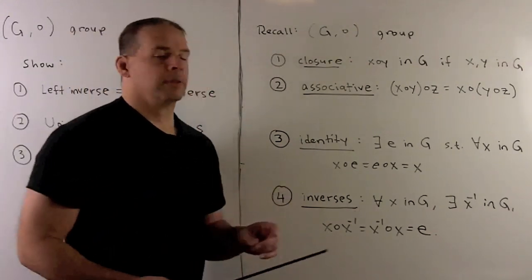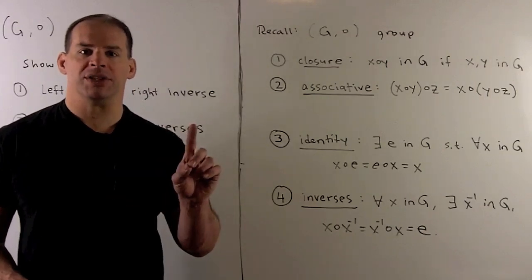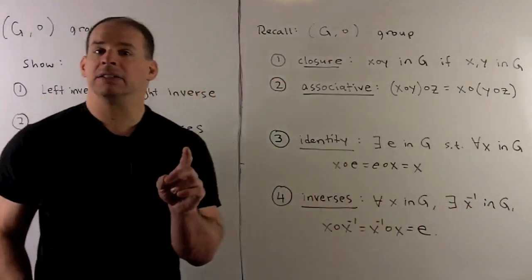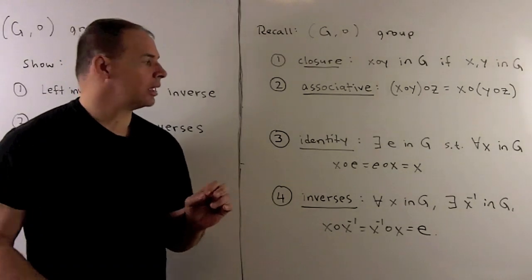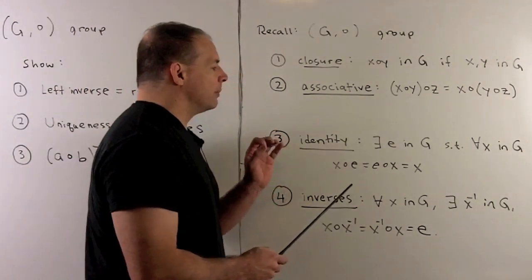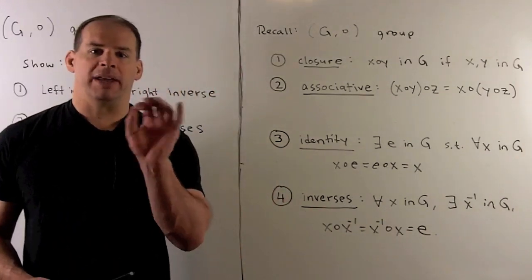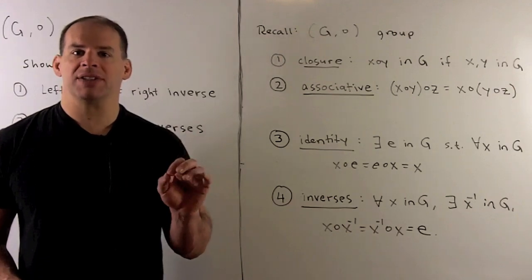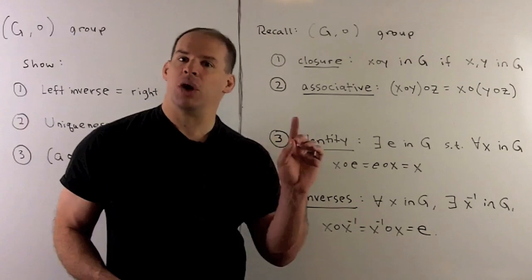Then we have associative. This just says when we multiply three elements, we can move the parentheses around as long as we stay in order. Remember, the net effect, in practice, we can ignore parentheses. Then we have the identity element. So there's going to be an element E in the group, such that if we pick any element of the group, say X, X times E equals E times X is equal to X. So multiplying by E on either side has no effect.